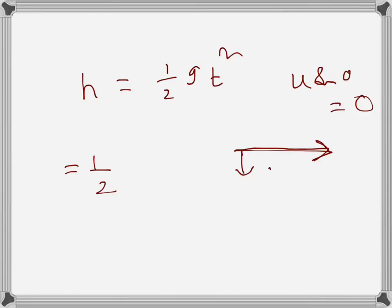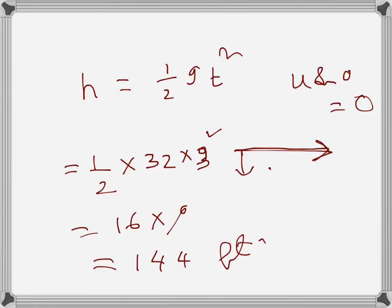So we can find height from this equation. So g is 32 and t is 3 squared, so 9. So that will be 16 times 9 which is 144 feet. That's the height.